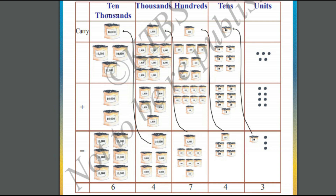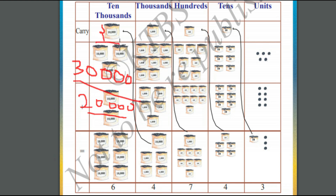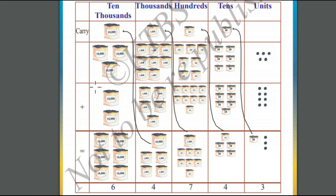Finally, in the ten-thousands place, the first number has 30,000 beads and the second number has 20,000 beads. Remember, we also have a carry of 10,000. So 20,000 plus 30,000 plus 10,000 is equal to 60,000. We represent 60,000 in the ten-thousands place as 6. So the sum of the two numbers is 64,743. We added two numbers by carrying from the previous position.